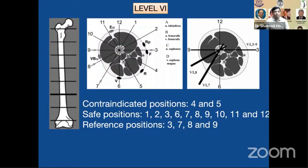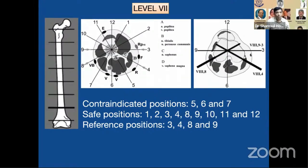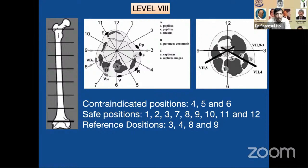In the posterior middle segment, vessels run posteriorly, so you can go safely in the lateral, anteromedial, and posterior parts. In the supracondylar area, the neurovascular bundle is mainly in the posteromedial part, so you can go very safely with pins and combinations as shown in the diagram. At level seven — the condylar area — the neurovascular bundles are mostly posterior, so you can go safely from lateral to medial oblique, and from posteromedial to posterolateral.